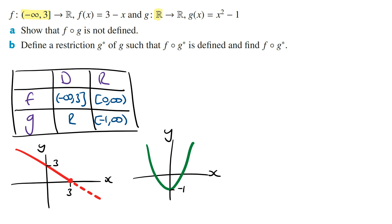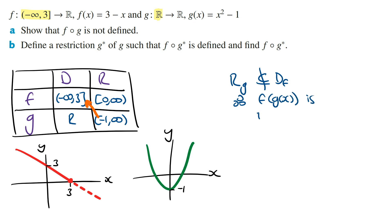From here, we can see that the range of the inner function is not a subset of the domain of the outer function, and so this means the composite function f of g of x is not defined. The range of the inner function g is not a subset of the domain of the outer function f, and therefore f of g of x is not defined.